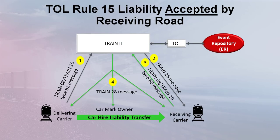This illustration shows the data flow for an accepted Rule 15 TOL. First, a TRAIN-08 message is sent to Railink by the delivering carrier advising that interchange cannot be accomplished. Second, a TRAIN-26 message is sent by Railink to the carrier that allegedly cannot accept the car in interchange, advising that Rule 15 relief has been requested. Third, a TRAIN-08 message is sent to Railink by the carrier that cannot accept cars, advising that the carrier will accept CarHire responsibility. Fourth, a TRAIN-28 message is sent to the delivering carrier by Railink advising that CarHire liability has been transferred. This message is also sent to the carrier that cannot accept the car and to the CarMark owner. All parties must use the TOL message in their calculation of CarHire liability.